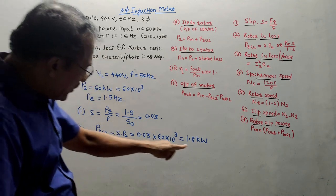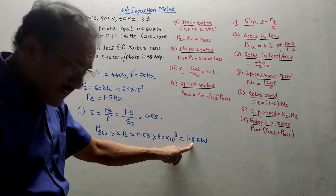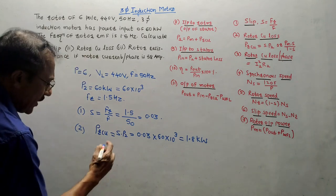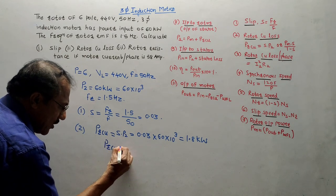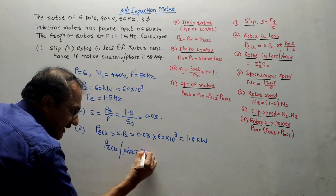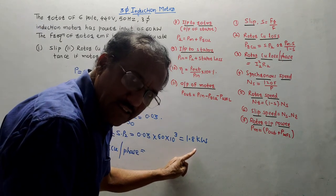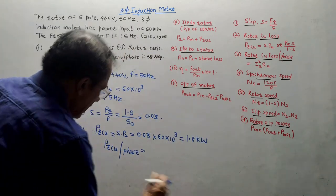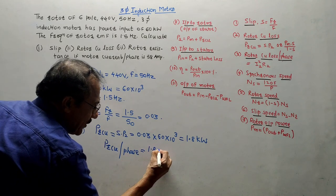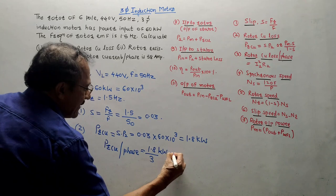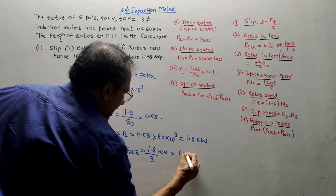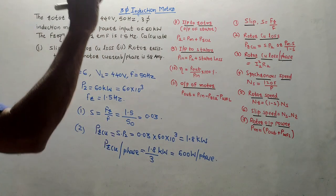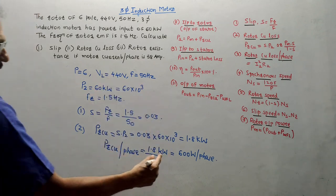This value of 1.8 kilowatt represents rotor copper losses for all three phases combined — it is a three-phase induction motor. If you want the value per phase, PRCU per phase = 1.8 kilowatt / 3 = 600 watts per phase. So 600 watts represents the copper losses of the rotor for each phase.